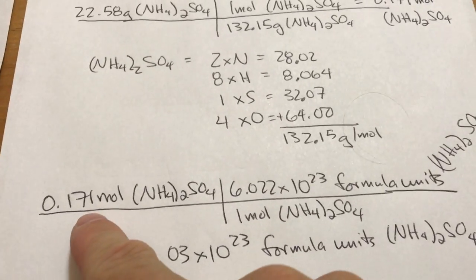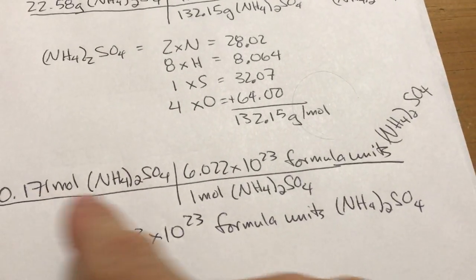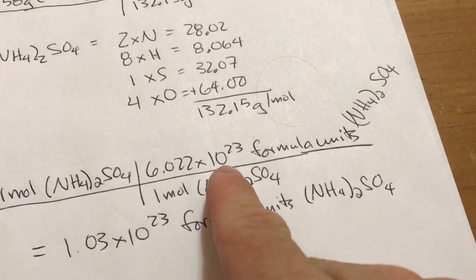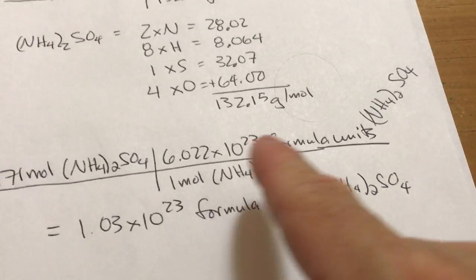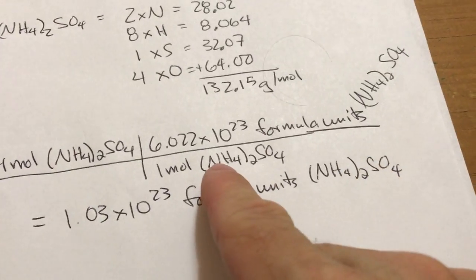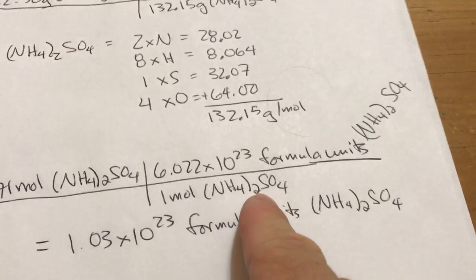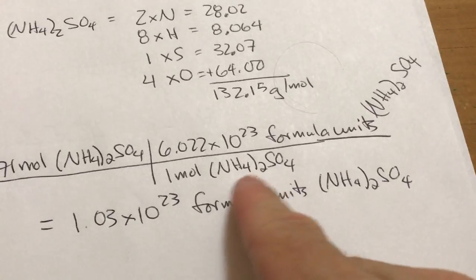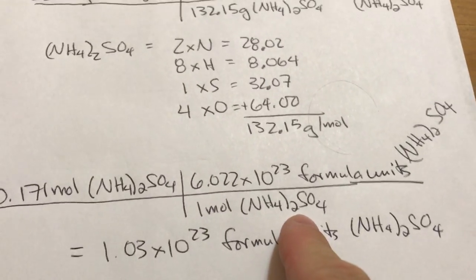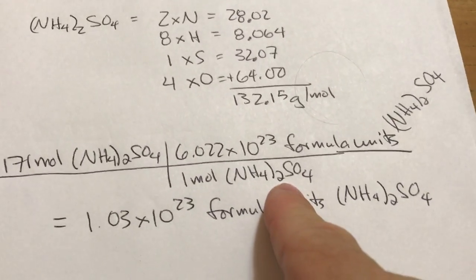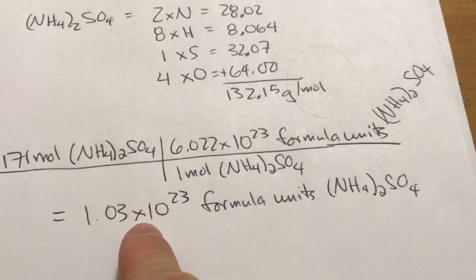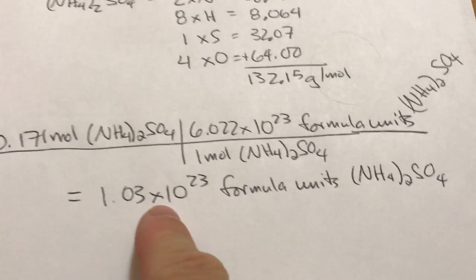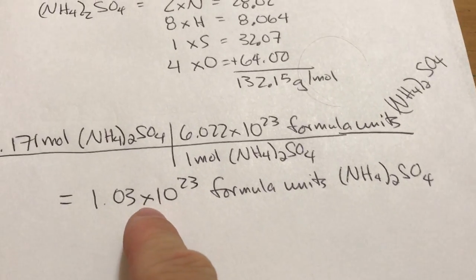The second part of our answer takes that 0.171 moles, multiplies it by Avogadro's number, 6.022 times 10 to the 23rd. Those are formula units, since this is an ionic compound. This is the simplest formula unit for that ionic compound. And multiplying those two numbers together, I get 1.03 times 10 to the 23rd formula units of ammonium sulfate.